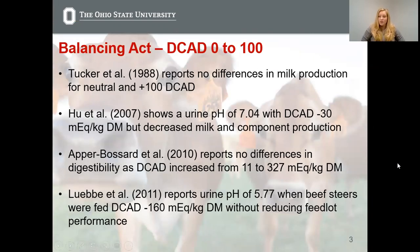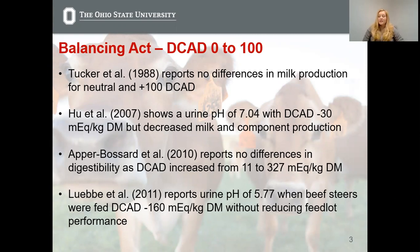But what about the range of zero to 100? We've talked about negative DCAD and a typical lactating DCAD. There are several studies that have illustrated no differences in any sort of production parameter in this DCAD range, with the addition of reducing urine pH, which will be essential to my research here.